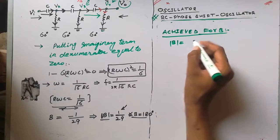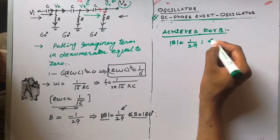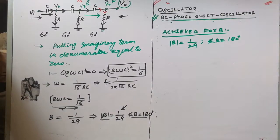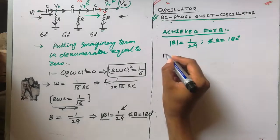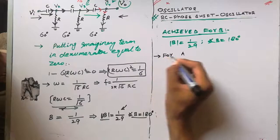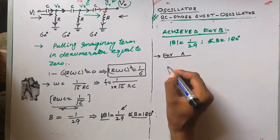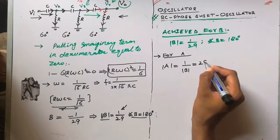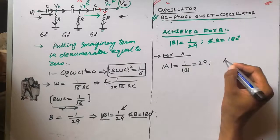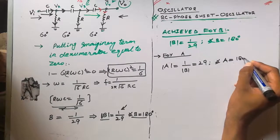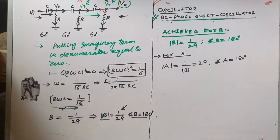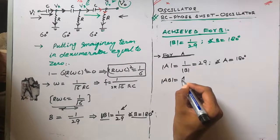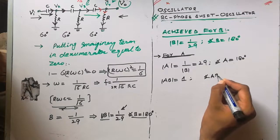For the feedback network B, we have found: magnitude of B equals 1/29 and phase of B equals 180 degrees. For the amplifier A, to satisfy the Barkhausen criterion, the magnitude of A must equal 1 over the magnitude of B, which is 29. The phase of A is already 180 degrees for the inverting amplifier. Therefore A times B has magnitude equal to 1 and phase equal to 0 degrees — the Barkhausen criterion is fully satisfied.